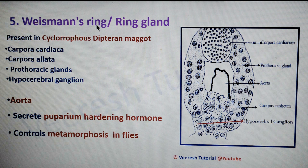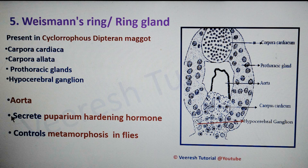The fifth one is Weismann's ring, or ring gland. In cyclorrhaphan dipteran maggots, Weismann's ring is formed by the fusion of corpora cardiaca, corpora allata, prothoracic glands, and the hypocerebral ganglion, forming a ring gland that surrounds the aorta. It secretes puparium-hardening hormone and controls metamorphosis in flies.